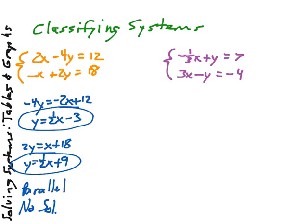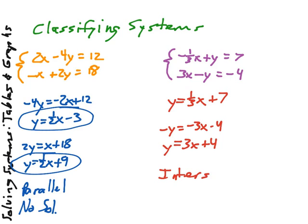What happens with our second system of equations? First, we're going to add 1 third x, so we have y equals 1 third x plus 7, and nothing more we can simplify. Let's move on to the second one. We're going to subtract 3x. We have negative y equals negative 3x minus 4, divided by negative 1, we have y equals 3x plus 4. Our slopes are different. These are intersecting lines. And as such, that means we have one solution.